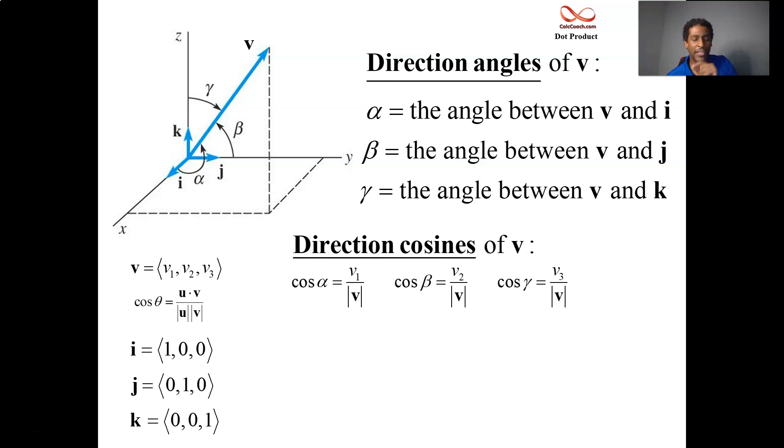Those should look familiar, actually. Remember how we find the unit vector that points in the same direction as a vector? These guys are actually the components of the unit vector that points in the same direction as v. All right, so we can use that to actually describe the vector, what angle it makes with each of the coordinate axes or each of the standard unit vectors.